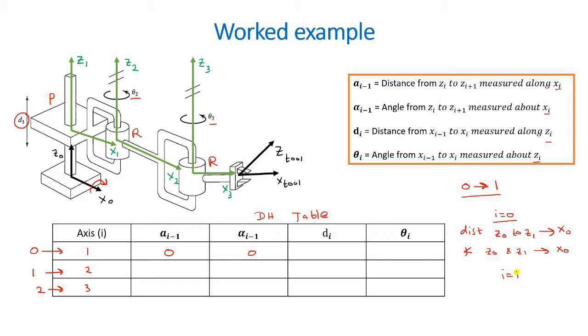Now i becomes equal to 1. Again, we want the distance for d i between our x0 to x1 about z1. So the distance between my x0 and x1 about z1 would actually be d1 because it is a prismatic joint. Well as the angle from x0 to x1 about z1 would be 0. And this is because x0 and x1. So how we can rotate our x0 to match up with x1 about z1. So the rotation would be here. They are both in line and both pointing in the same direction. So the angle would be 0. There would be no rotation around z1.